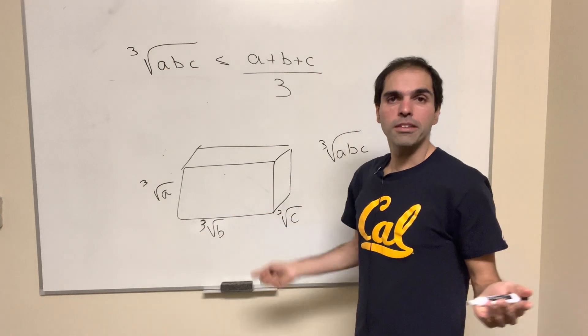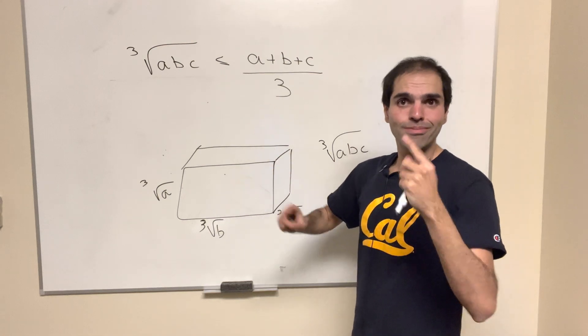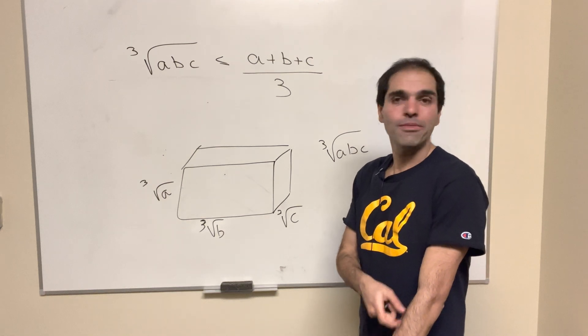And then this is where it got a bit stuck. I wasn't sure what the analog of the triangles are. I mean, probably pyramids.